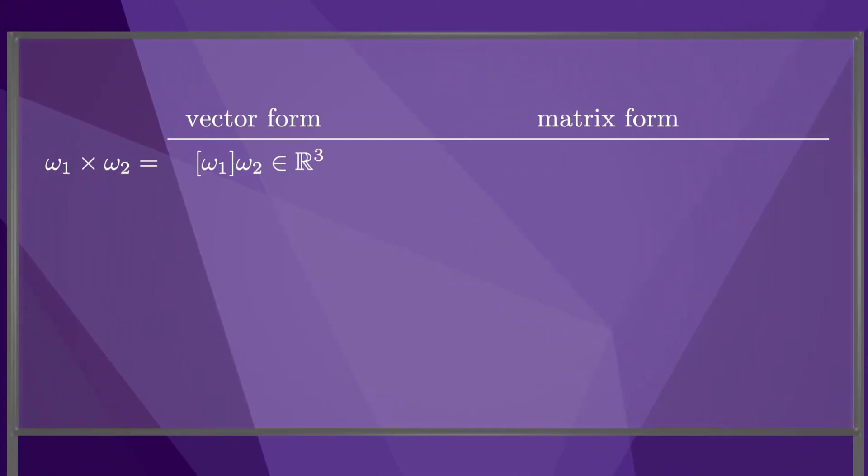Before proceeding further, we need to define an operation on 6-dimensional twists that is analogous to the cross-product operation on 3-dimensional vectors. Remember that we used the bracket notation to write the cross-product of omega-1 and omega-2 in R3. The result is a 3-vector.